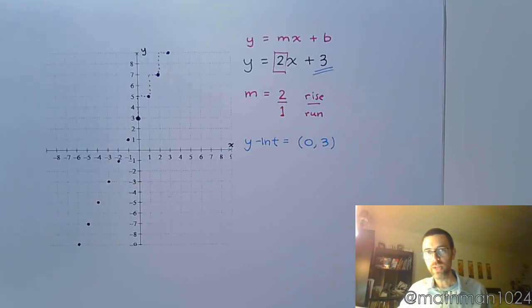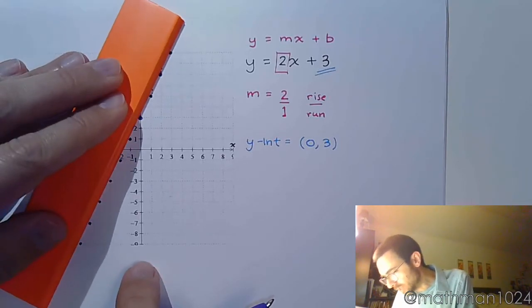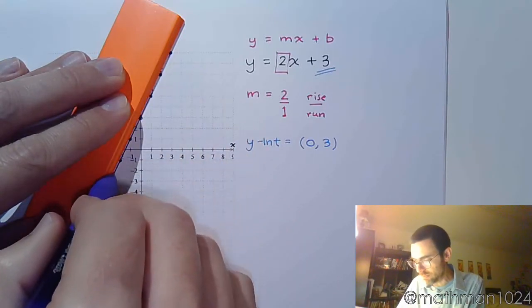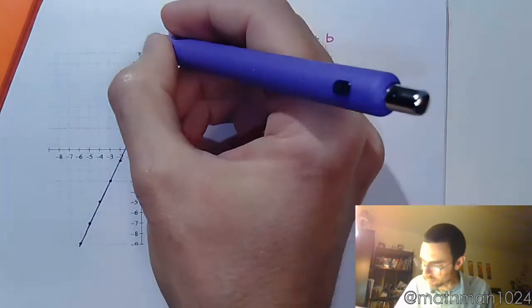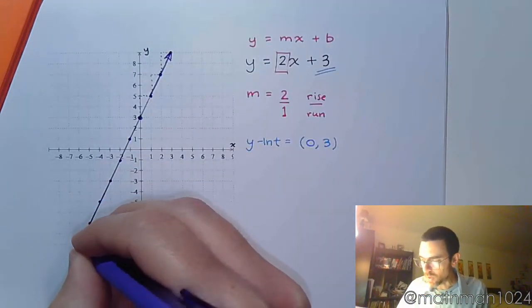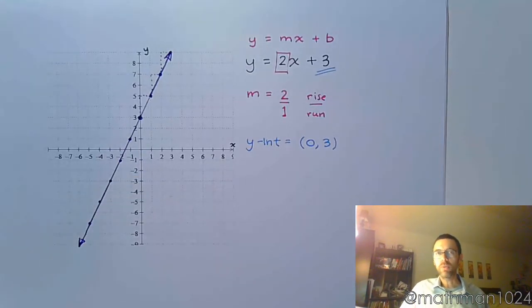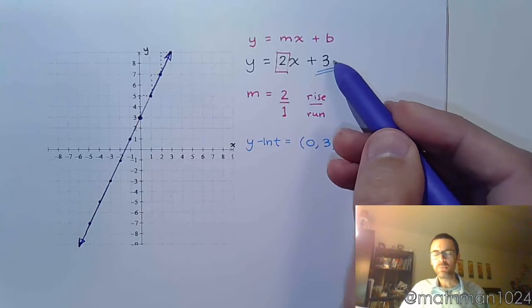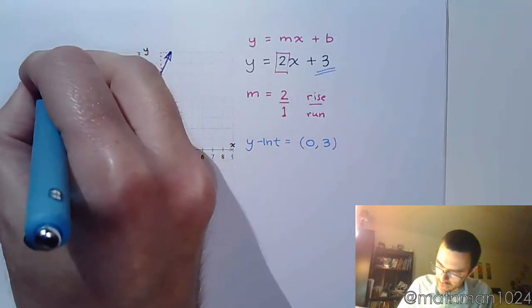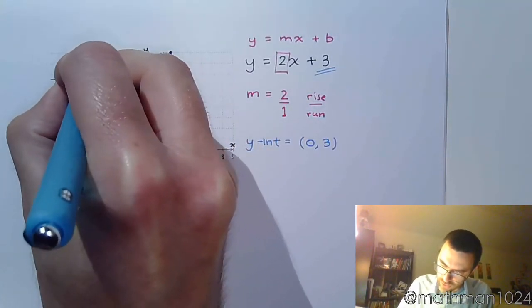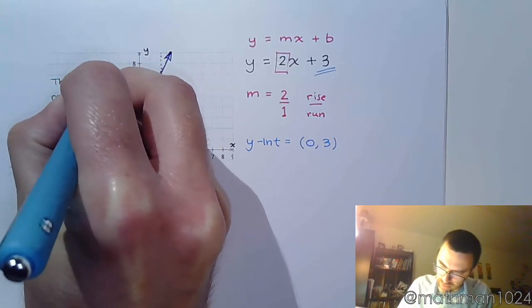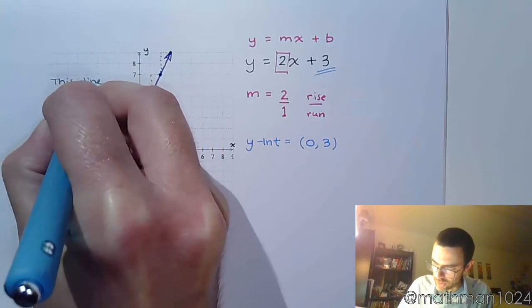Now we just take our straight edge and draw a nice line that connects everything together. Let's make sure we understand why we have the line to begin with. All the points marked out are solutions to this equation, but they're not the only solutions. There are an infinite number of solutions for this equation, and this line represents all solutions to the equation.